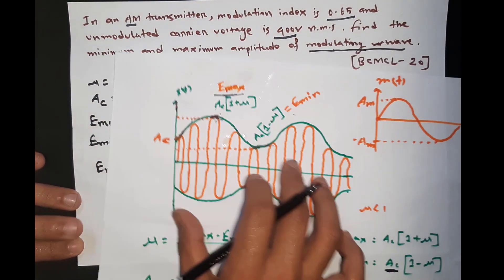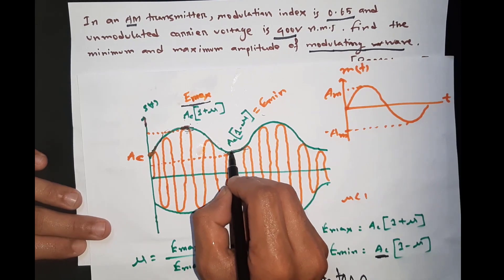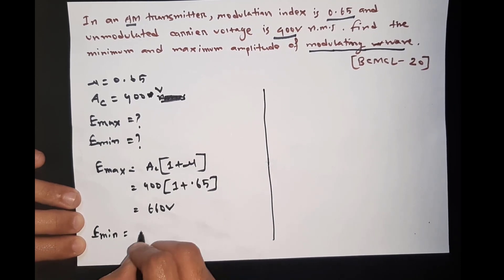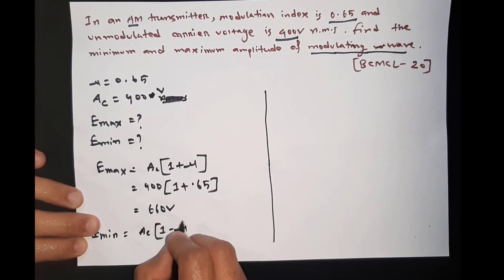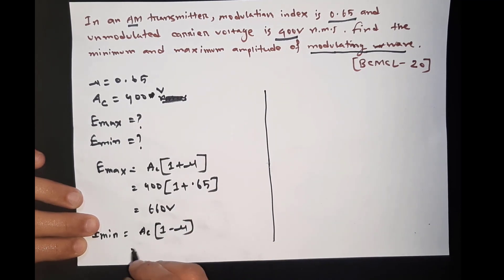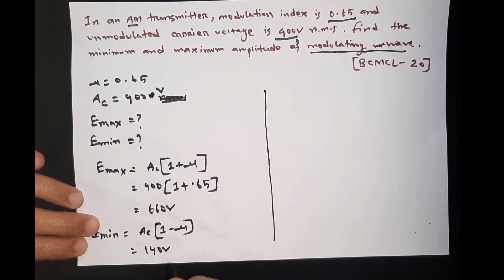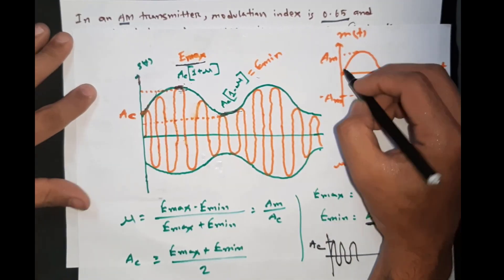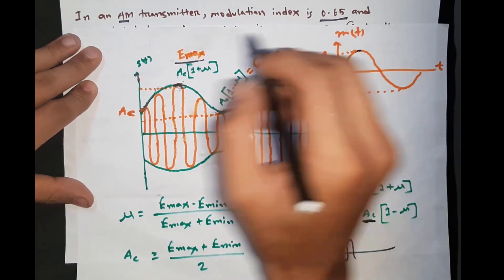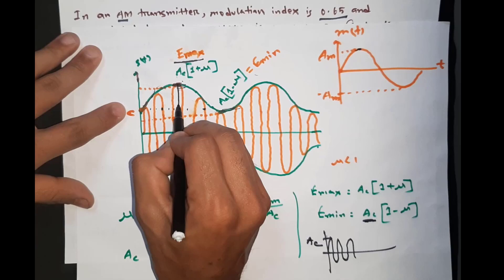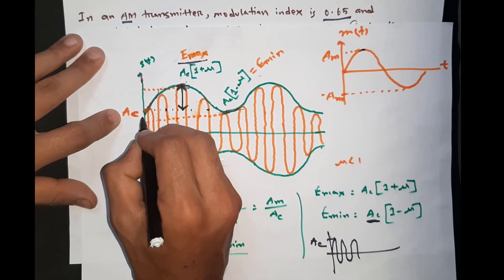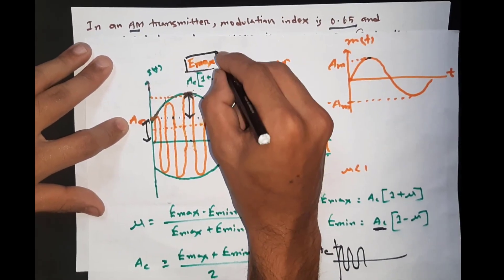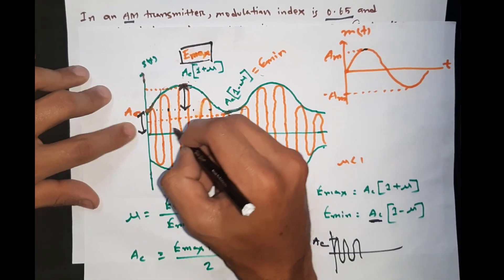Similarly, we have the minimum value: AC(1 − μ), so we have the minimum value of AC(1 − μ). The AC value and the mu value give us the minimum. We have the maximum value of AC(1 + μ), and we can see this in a simple action. So, we have the maximum value as AC(1 + μ).